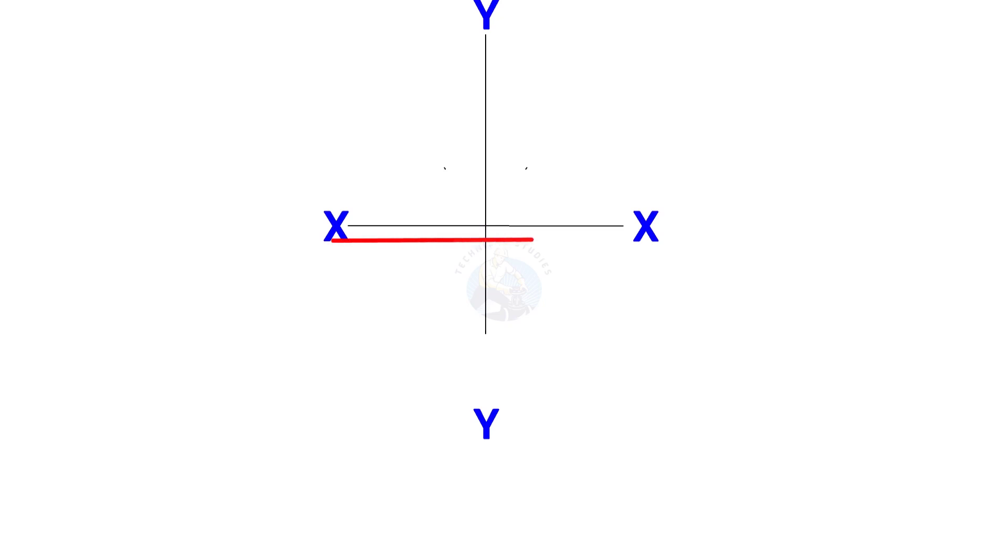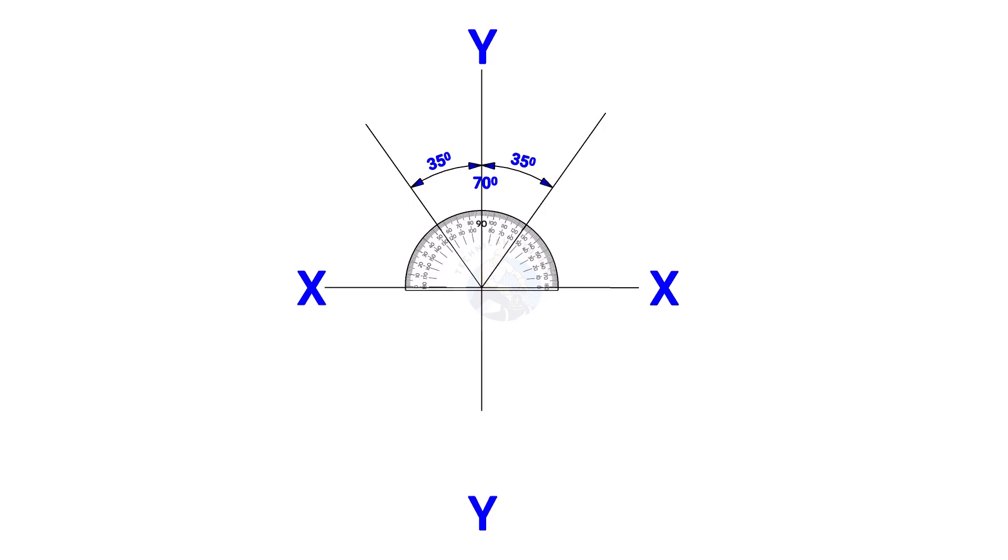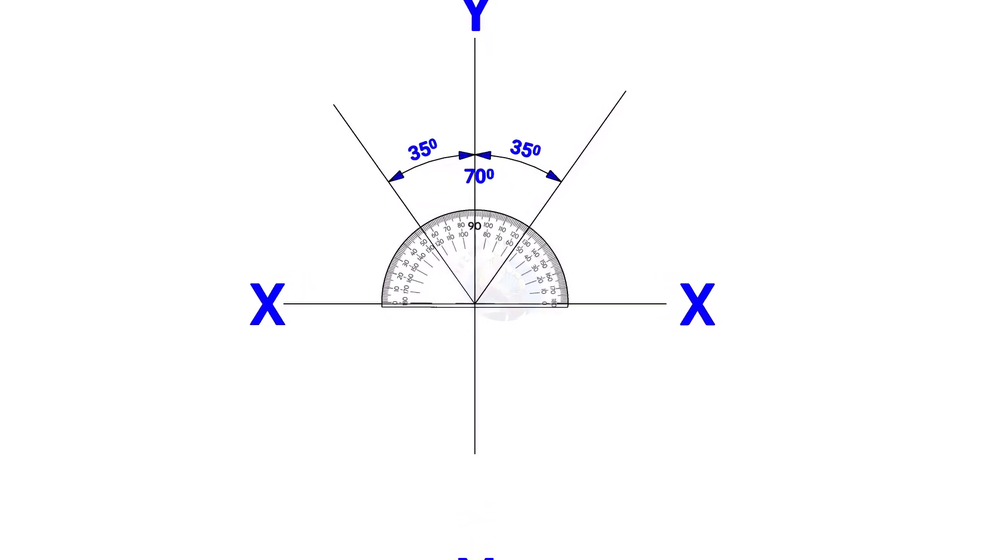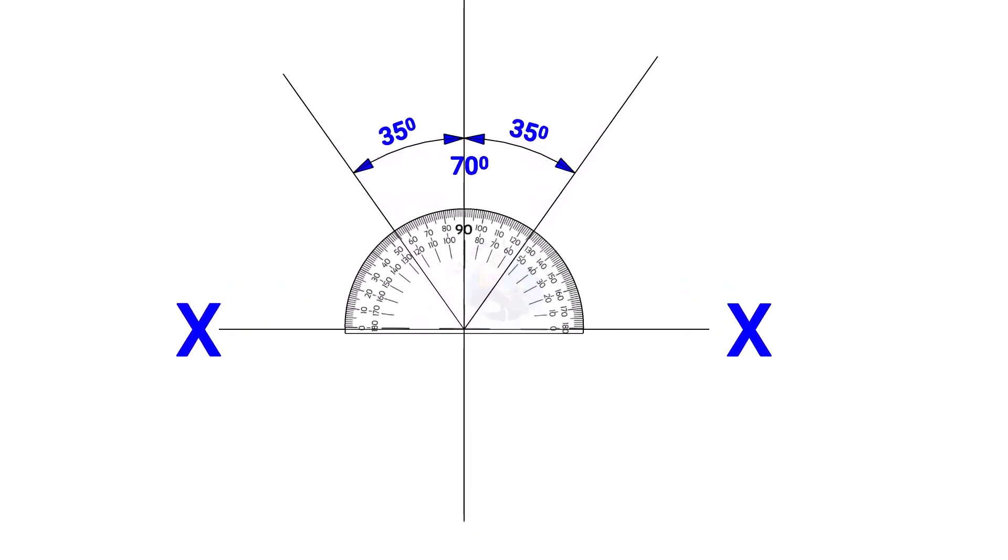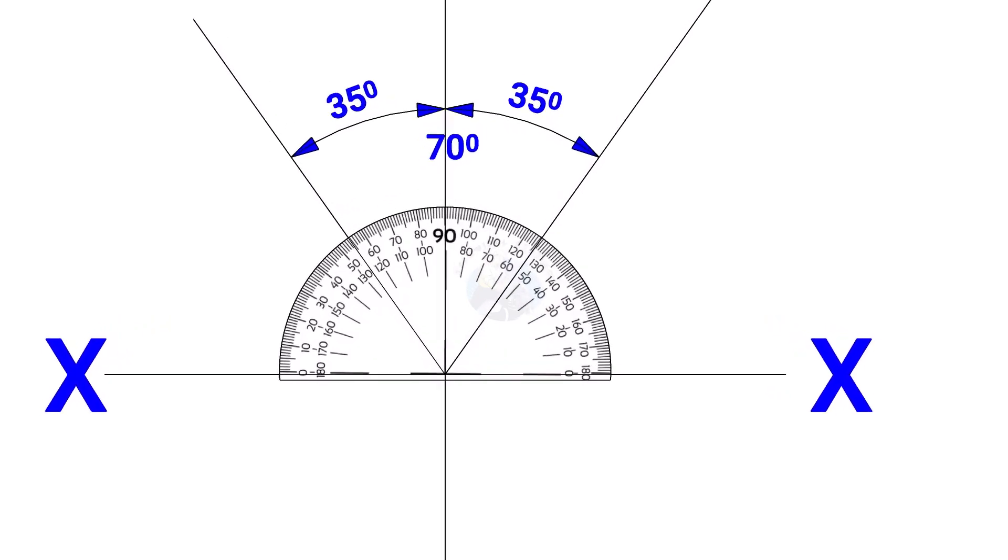Draw line XX and its perpendicular line YY. Since the including angle of the Y branch is 70 degrees, mark 35 degrees on both sides of the axis YY.